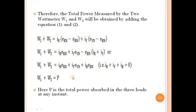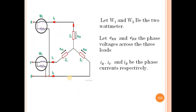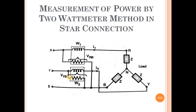So the final equation for the two wattmeter method is: Total Power P = W1 + W2. The same derivation can be done for a delta-connected load and will be covered in the next lecture. Thank you very much for watching this video lecture. We will meet in the next lecture.